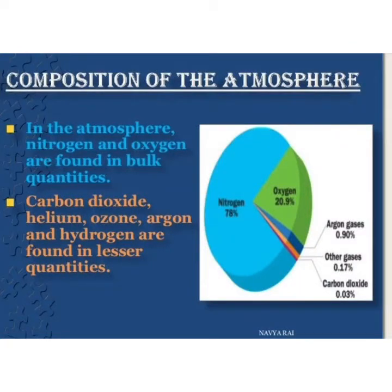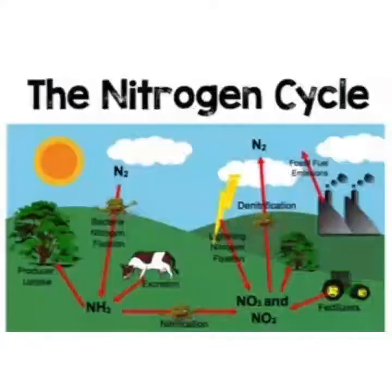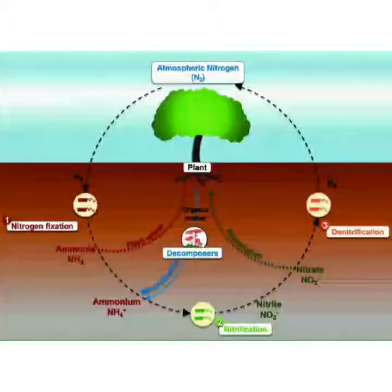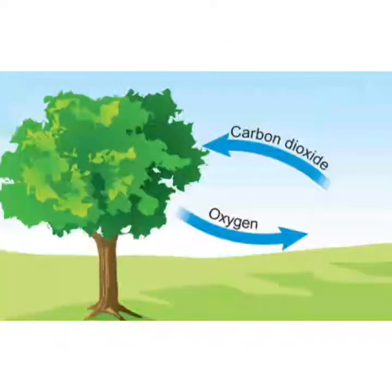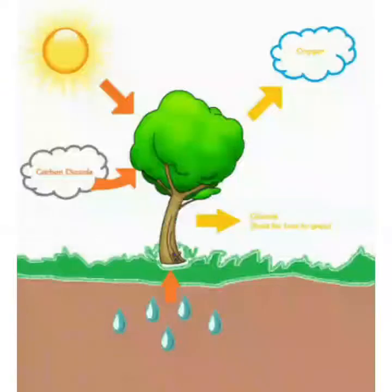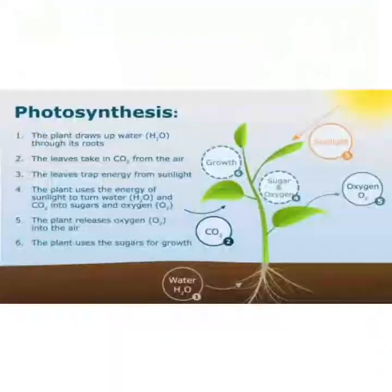Nitrogen and oxygen are the two gases which make up the bulk of the atmosphere. Nitrogen is important for survival — many bacteria use nitrogen for fixation and change its form so that plants can use it. Oxygen is the second most plentiful gas on earth. Humans and animals take oxygen from the air as they breathe. Oxygen is a by-product of photosynthesis, where plants take in carbon dioxide and release oxygen, which is used for respiratory activity and survival.